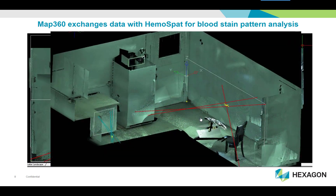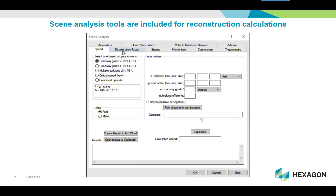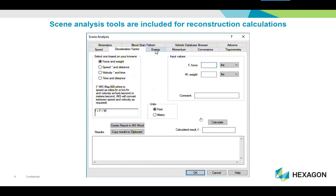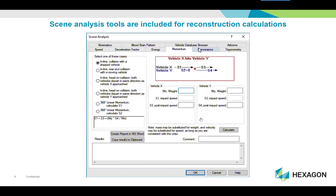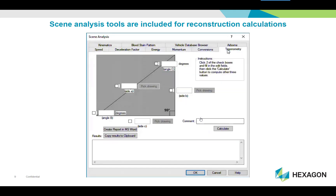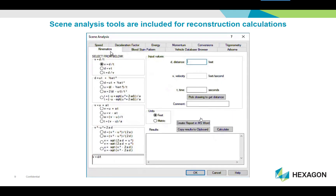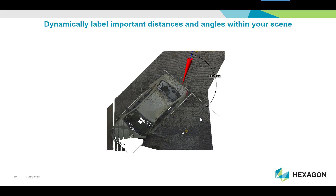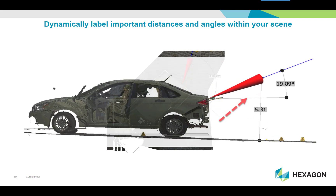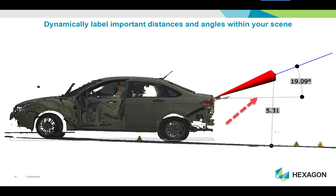Map360 exchanges data with Hemospat for bloodstain pattern analysis. Scene analysis tools are also included for reconstruction calculations.